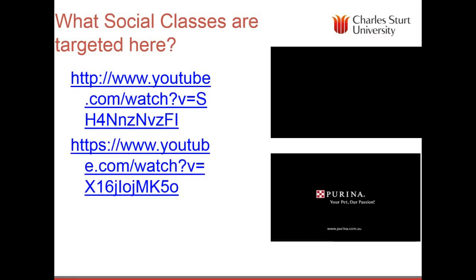The first advertisement is of course for a working class campaign — Victoria Bitter has very much in Australia linked itself to the working class. The second is for the upper middle class, which is Purina Cat Food. Paradoxically, as we'll see, social class tends to be really useful for items that don't involve a high degree of expenditure, but which do reflect an underlying lifestyle.